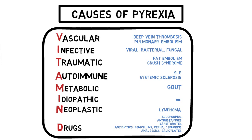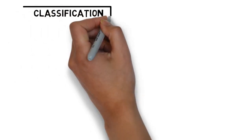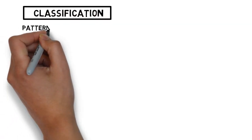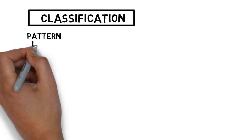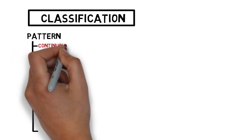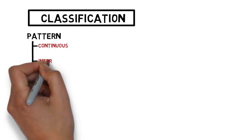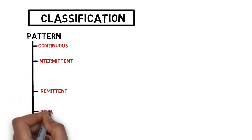Drug consumption is another example of exogenous pyrogens other than infection, with common examples listed. Fever can also be classified in terms of pattern and duration — both classifications are useful in formulating differential diagnoses. There are five patterns of fever: continuous, intermittent, remittent, relapsing, and undulant.